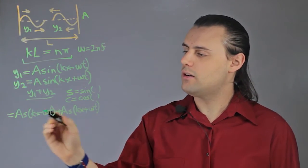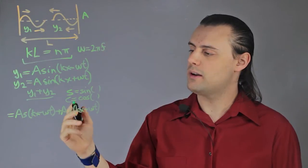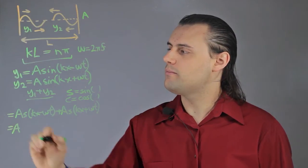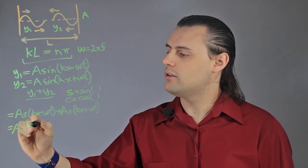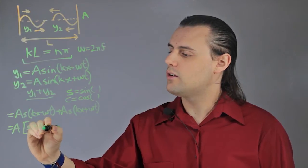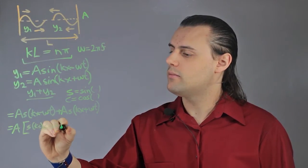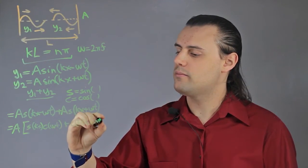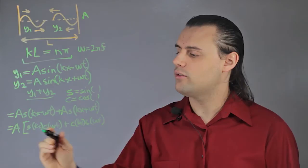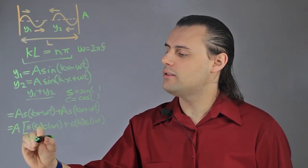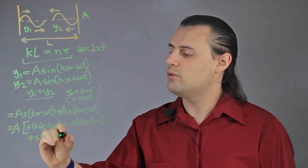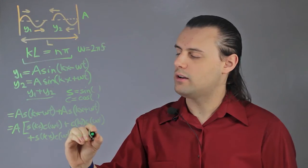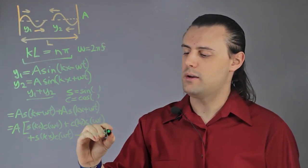And I can factor out the amplitude A, and split up these sines into respective sines and cosines using a trigonometric identity. So I'm going to end up with A times [sin(kx)cos(ωt) + cos(kx)sin(ωt)]. Splitting up the first one, and then the second one, I have plus sin(kx)cos(ωt) minus cos(kx)sin(ωt).